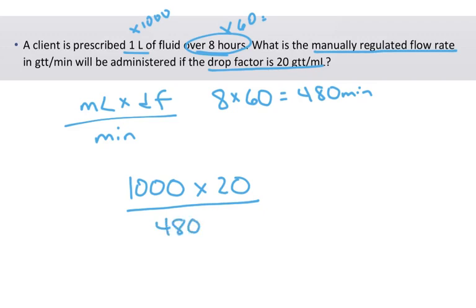Then you just do the math with your calculator. So you've got 1,000 times 20 equals divided by 480. And I have 41.6. But for GTT per minute, you have to round to a whole number. So that 6 makes that 1 go up to a 2. Everything in front stays the same. And your abbreviation is GTT per minute.